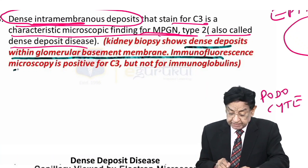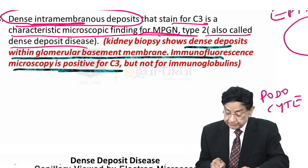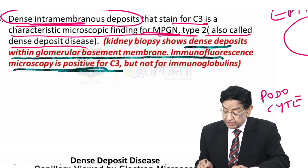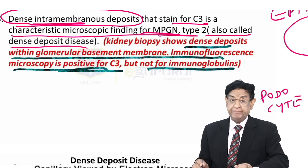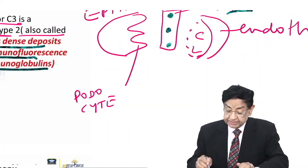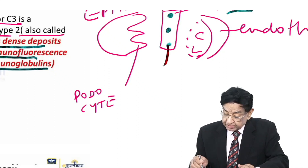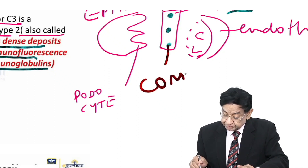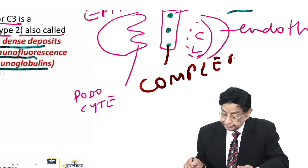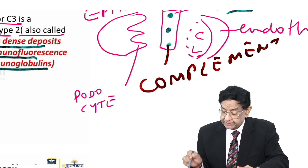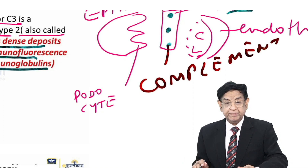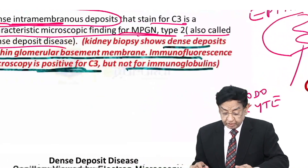Immunofluorescence microscopy is positive for complement but not for immunoglobulin. That means whatever is deposited here, these are complements. The stain will show complement, not immunoglobulins.